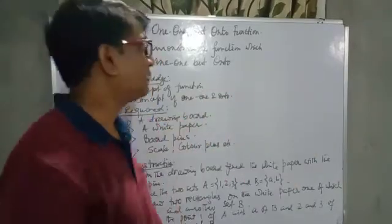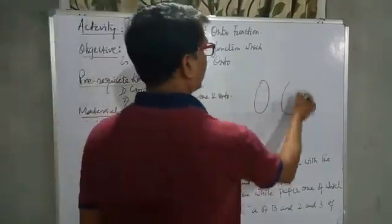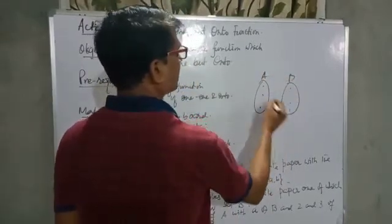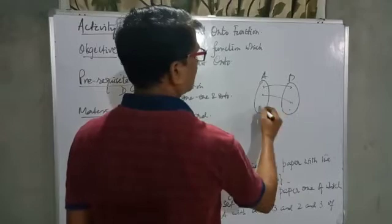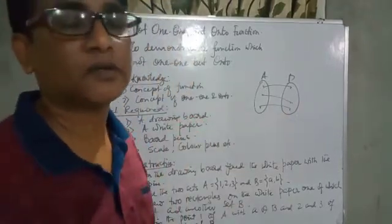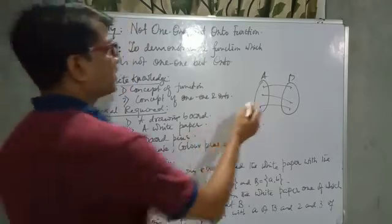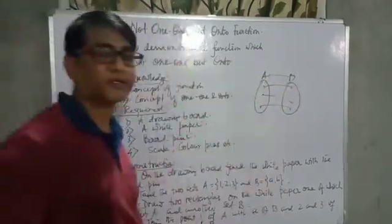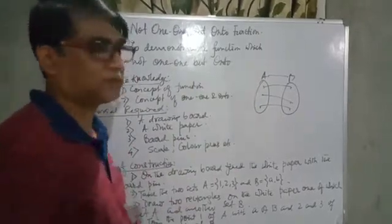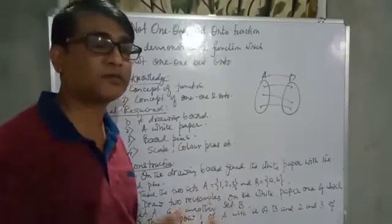For this we need some prerequisite knowledge. We need the concept of a function. The concept of function is: if we are taking two sets A and B, and each and every element of A has a unique image in B, then we can say the relation is a function. Then we check whether it is one-one or onto.